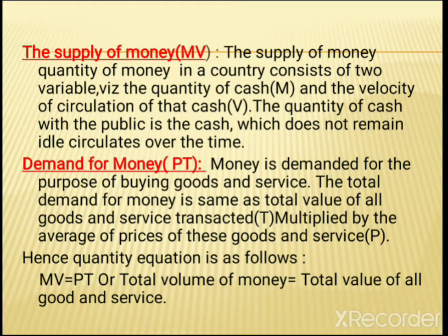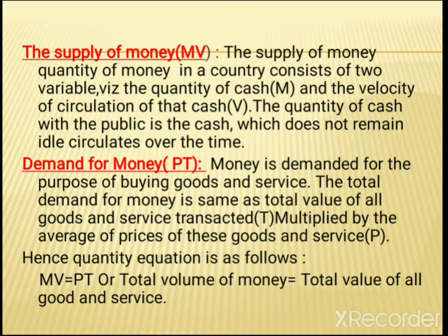The supply of money consists of two variables: the quantity of cash M and the velocity of circulation of cash V. The quantity of cash with the public does not remain idle over time. The demand for money, represented by P and T, is for the purpose of buying goods and services. The total demand for money equals the total value of all goods and services transacted, that is T, multiplied by the average price of these goods and services, that is P. Hence, the quantity equation is: MV = PT, or the total value of money equals the total value of all goods and services.